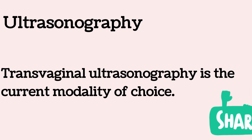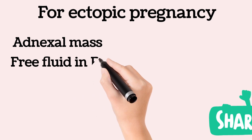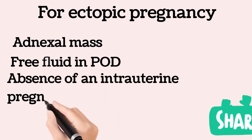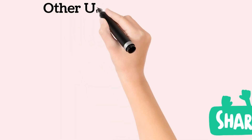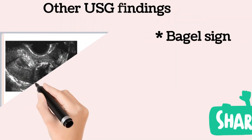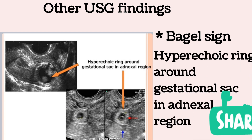Unfortunately, ultrasonographic visualization of an ectopic pregnancy has poor sensitivity. Visualization of an adnexal mass and free fluid with absence of intrauterine pregnancy is specific for ectopic pregnancy. A hyperechoic ring around the gestational sac in the adnexal region on ultrasound is called the bagel sign.